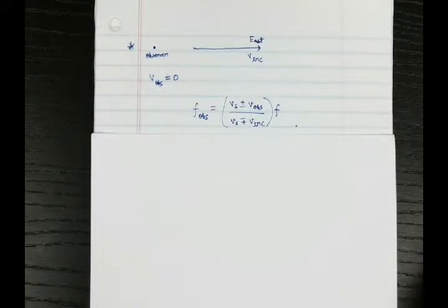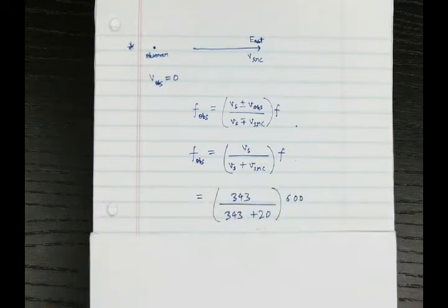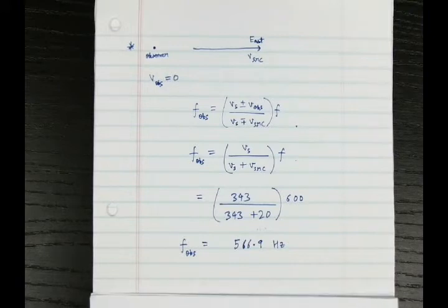This is the equation for our case, and if we put in the values—343 meters per second for the speed of sound in air and 20 meters per second for the speed of the source—we see that the frequency being observed now is 566.9 Hertz, which is less than the frequency in the stationary case.